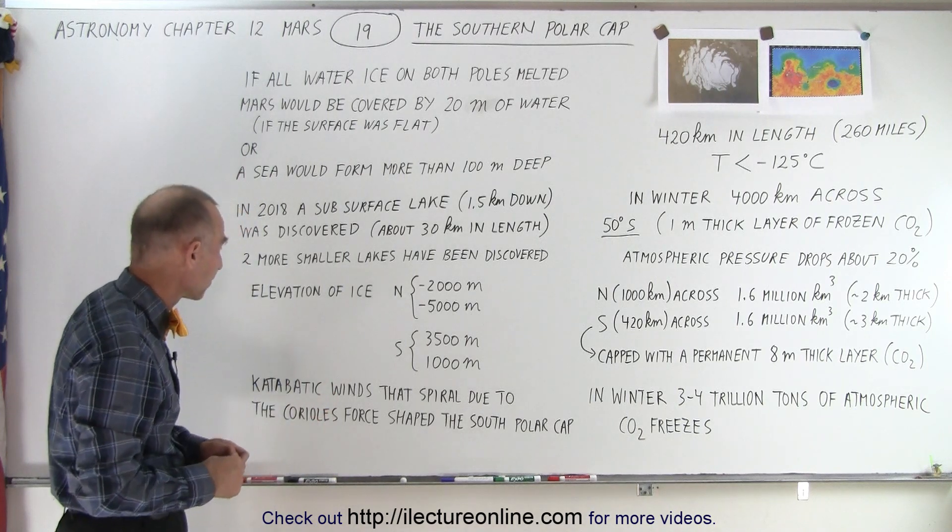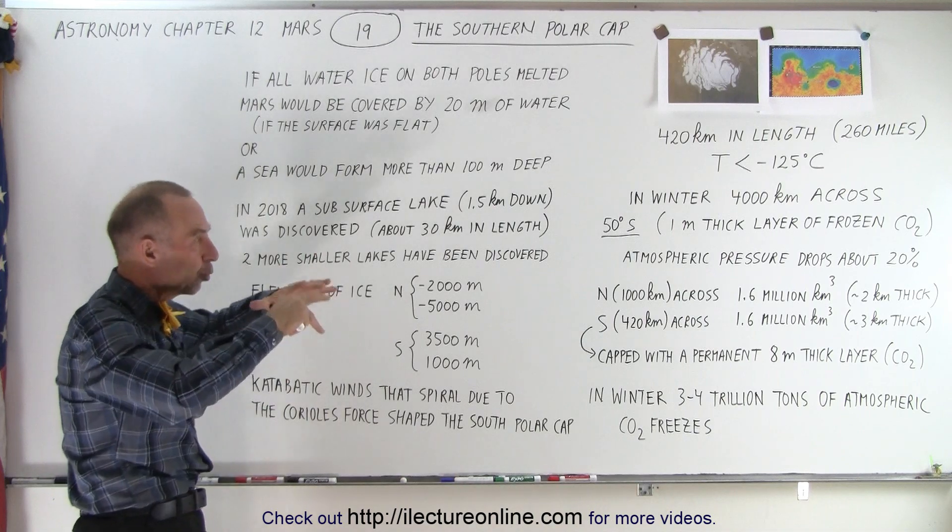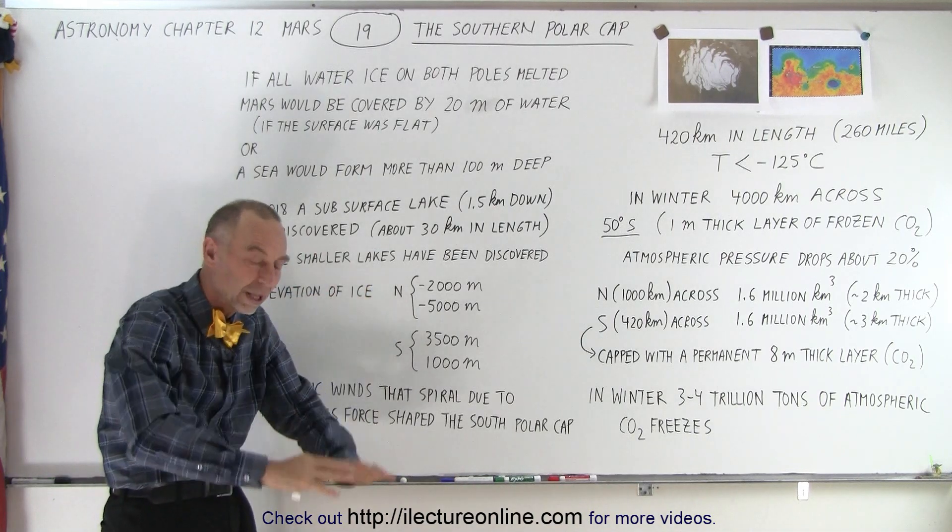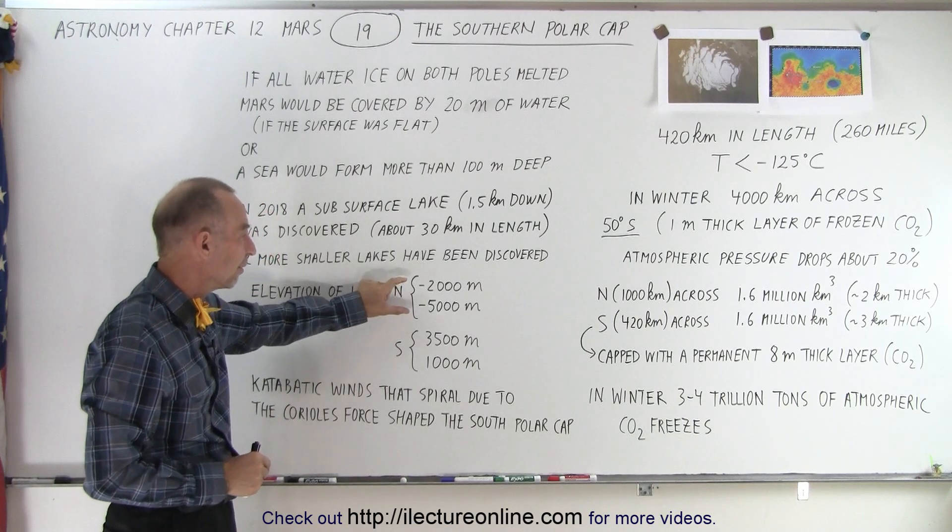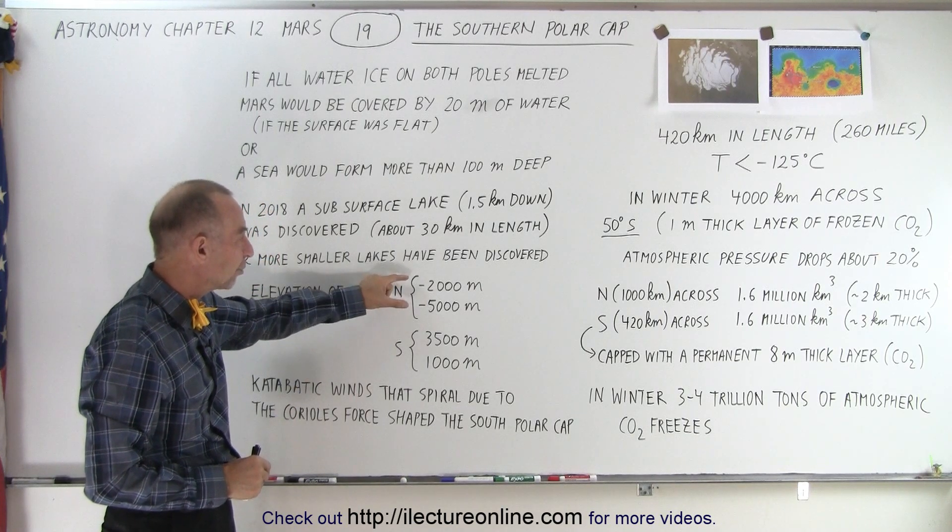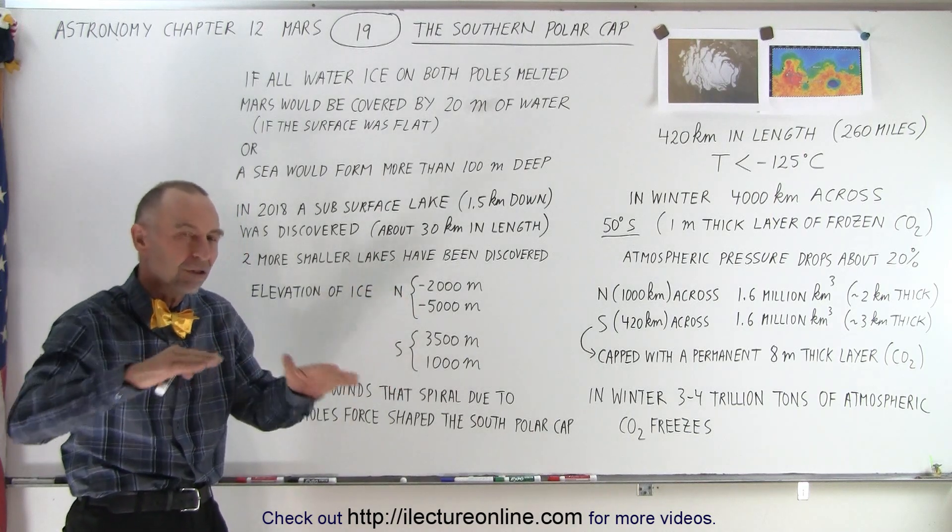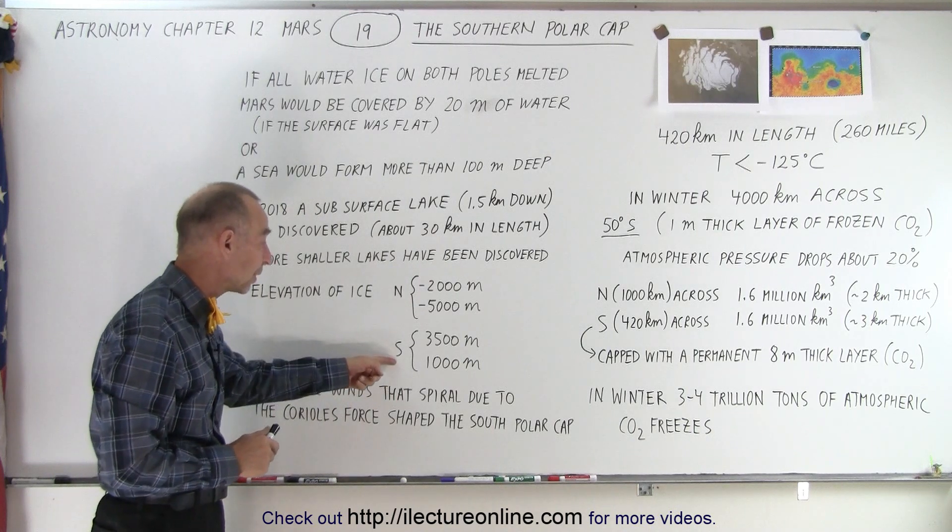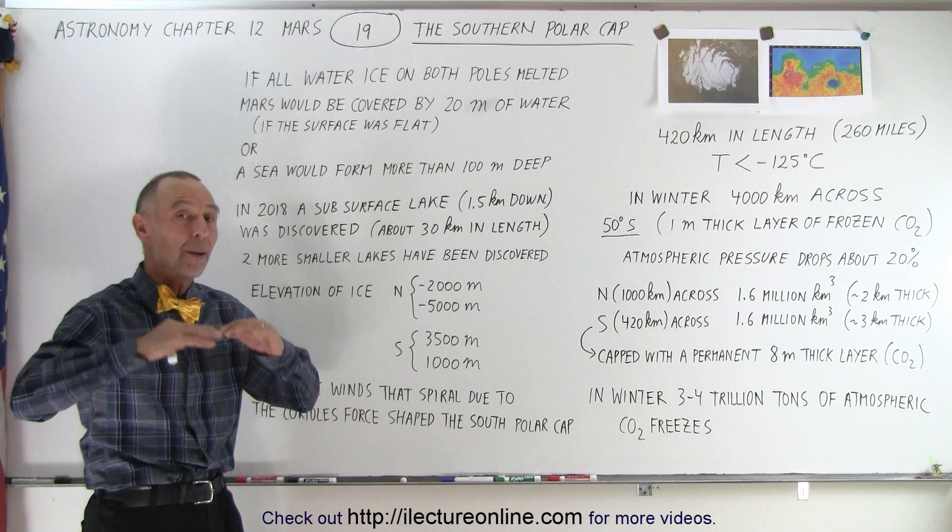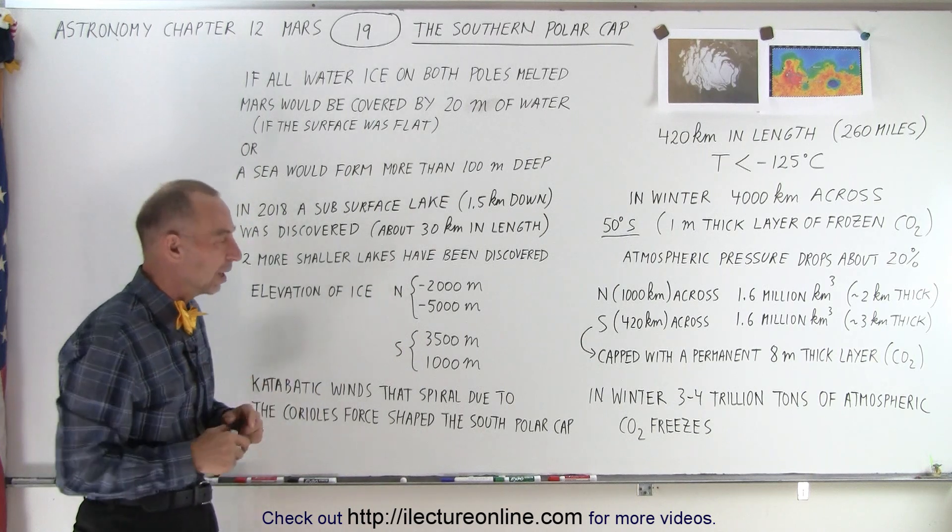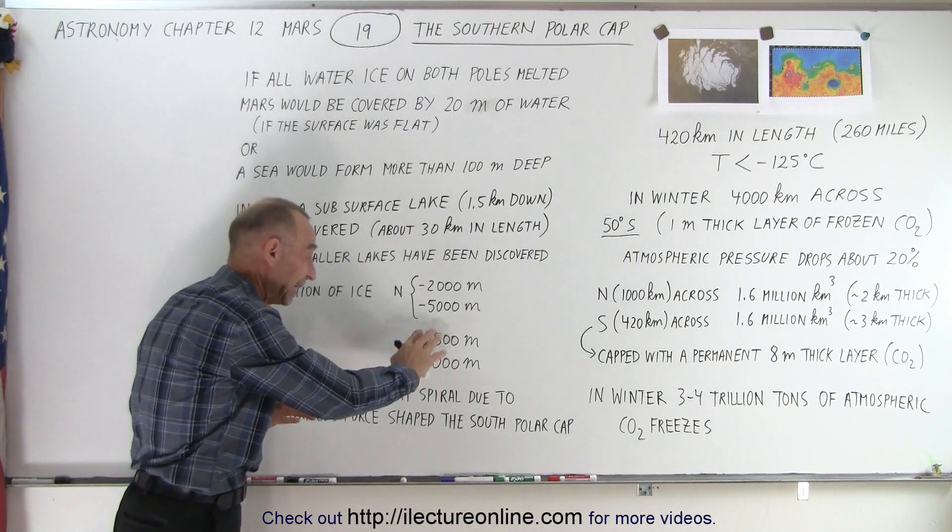Another interesting fact is that the elevation of the northern hemisphere on Mars is much lower than the elevation of the southern hemisphere. So the ice pack at the northern hemisphere falls to about minus 2000 to minus 5000 meters below the average elevation of the planet Mars as opposed to the southern polar cap that exists at about a thousand to 3500 meters above the average height of the Martian surface.